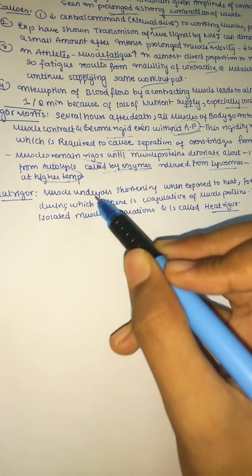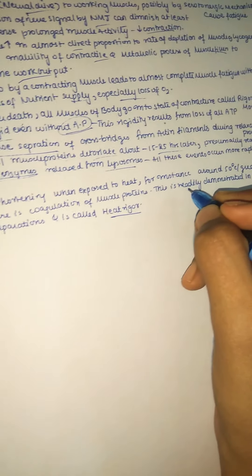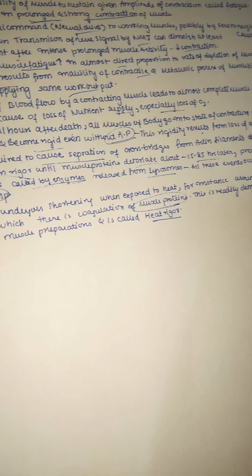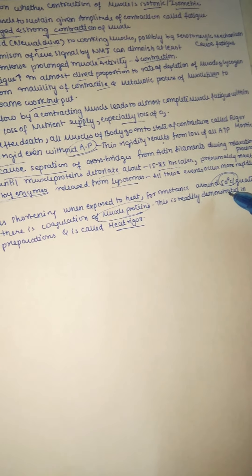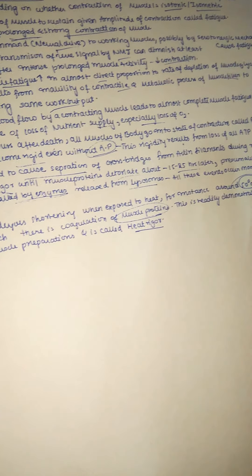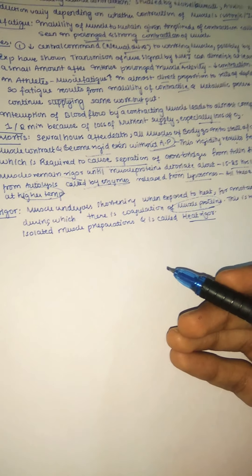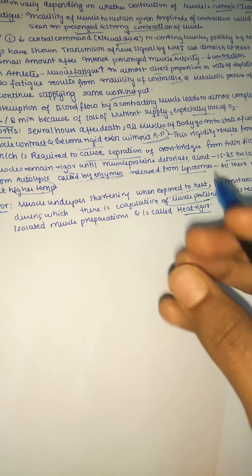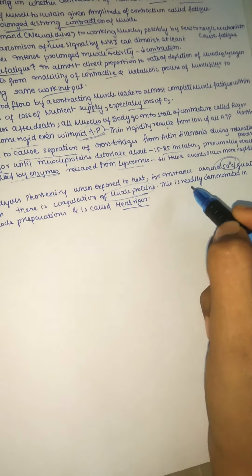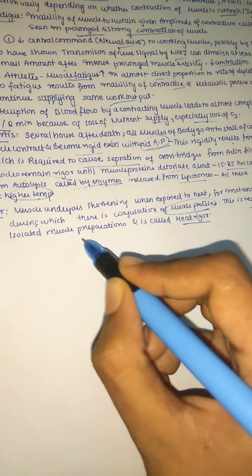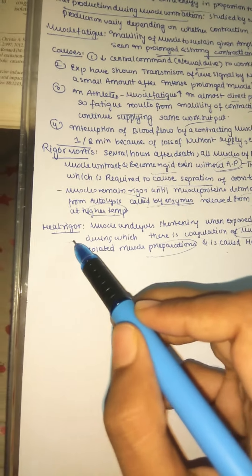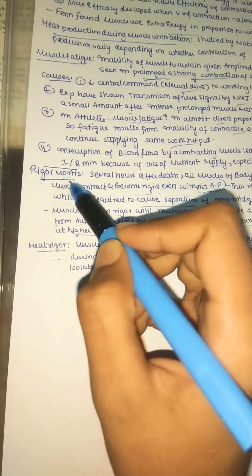Heat rigor: the muscle undergoes shortening when exposed to very high heat, around 50 degrees or greater, during which coagulation of muscle proteins occurs. This is readily demonstrated in isolated muscle preparations. It is called heat rigor because heat causes rigidity, while rigor mortis — 'mortis' meaning death — is rigidity caused by death.